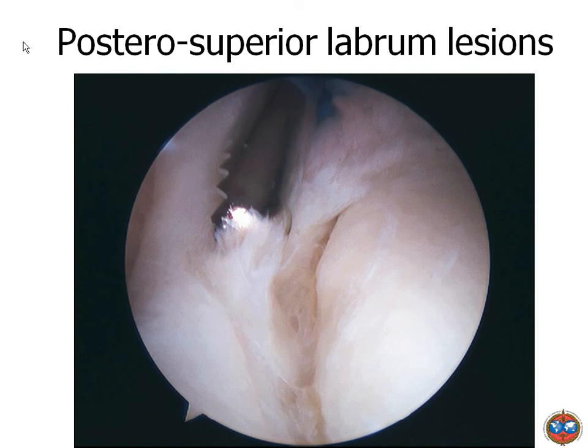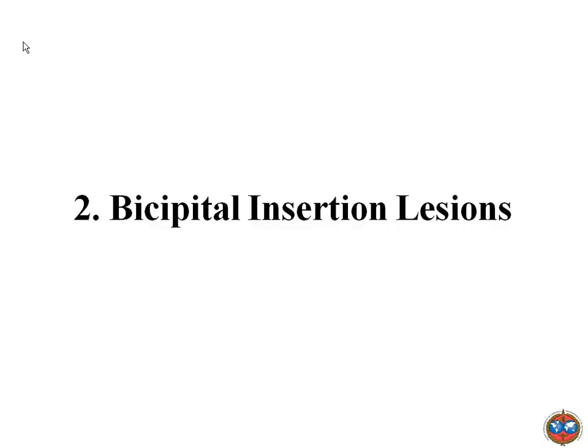I had this experience with patients playing for France in handball — if you fix that posterior superior lesion very tightly, their throwing speed will decrease. It is because they have this small posterior instability that they can load the arm very strongly and throw the ball at 120 kilometers per hour. If you fix the lesion they can only reach 80.